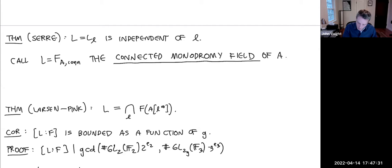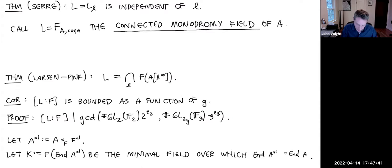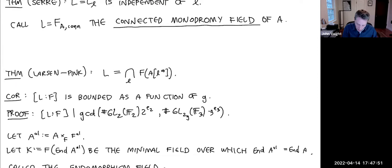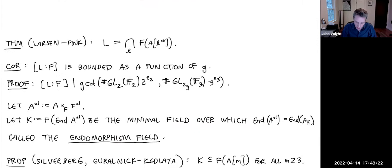The other thing we observed for elliptic curves was that endomorphisms play a role. Let A_{ar{F}} be the base change of A to the algebraic closure, and let K be the minimal field over which End(A_{ar{F}}) is defined — I'll call this the endomorphism field. This doesn't mean the endomorphisms are commutative; it's just the field over which the full endomorphism ring is obtained.